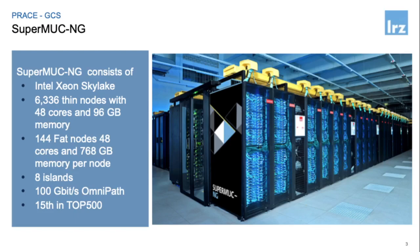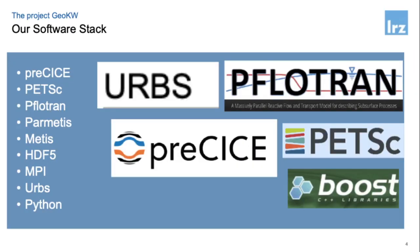SuperMUC-NG is currently 15th in the top 500, with 6,500 nodes and OmniPath as interconnect. Our software stack is PFloatran, a Fortran-based code for simulating groundwater flow, and ERVS, which Leonardo Dersky already talked about. We also use Precise, Petsy, Boost, HDF5 MPI, Python, and Parmetis for the meshing parts. This relatively complex software stack has to be installed and maintained for many partners.